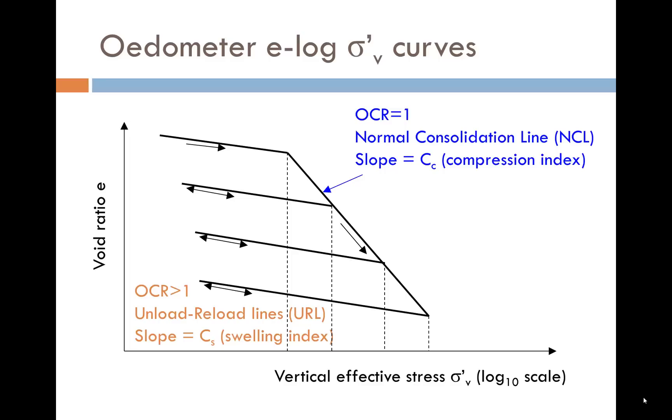In reality, there are an infinite number of what we call unload-reload lines, or URLs, all with the same slope. The slope in this over-consolidated region is called the swelling index and is given the symbol C subscript S.